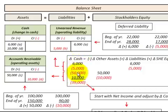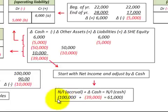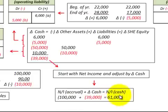We total the change in cash from changes in liabilities and other assets, then adjust net income by that amount — starting with the accrual net income, adding the cash change, to arrive at net income on the cash basis. For example, starting with $100,000 accrual net income, adding minus $39,000, gives us net income on the cash basis of $61,000.